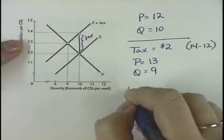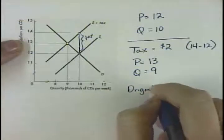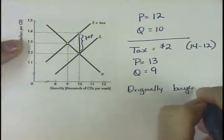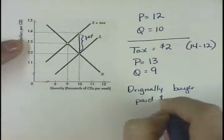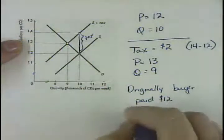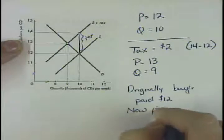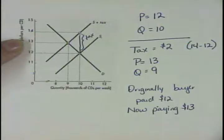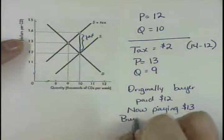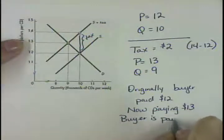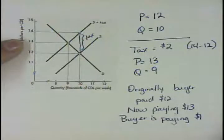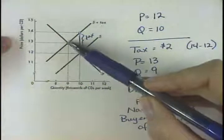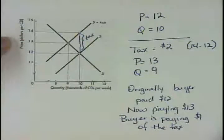originally, the buyer paid $12 for the CD. Now they're paying $13 for the CD. So the buyer is paying $1 of the tax. They originally were paying $12, now they're paying $13. So the buyer is paying $1 of the tax.